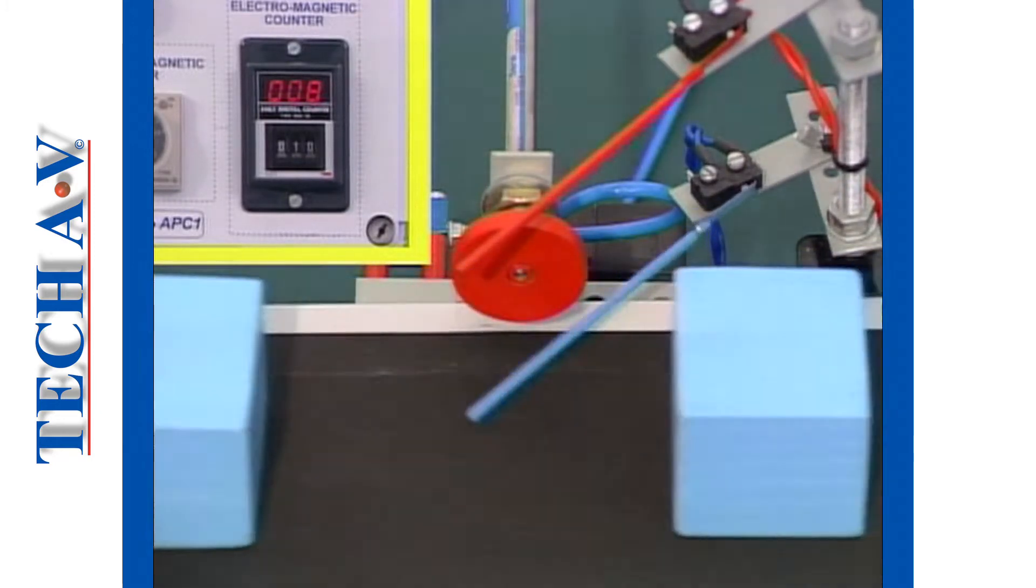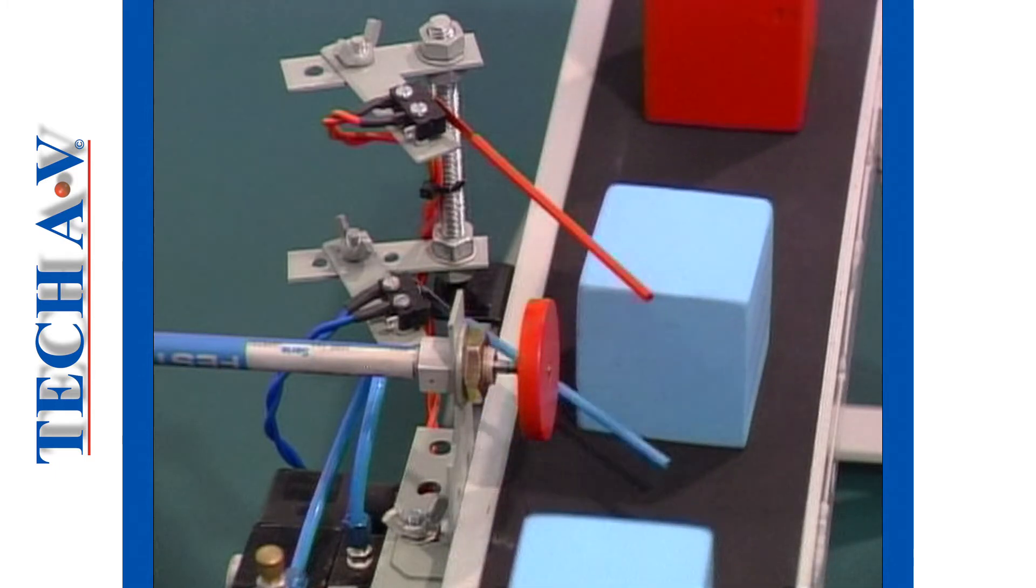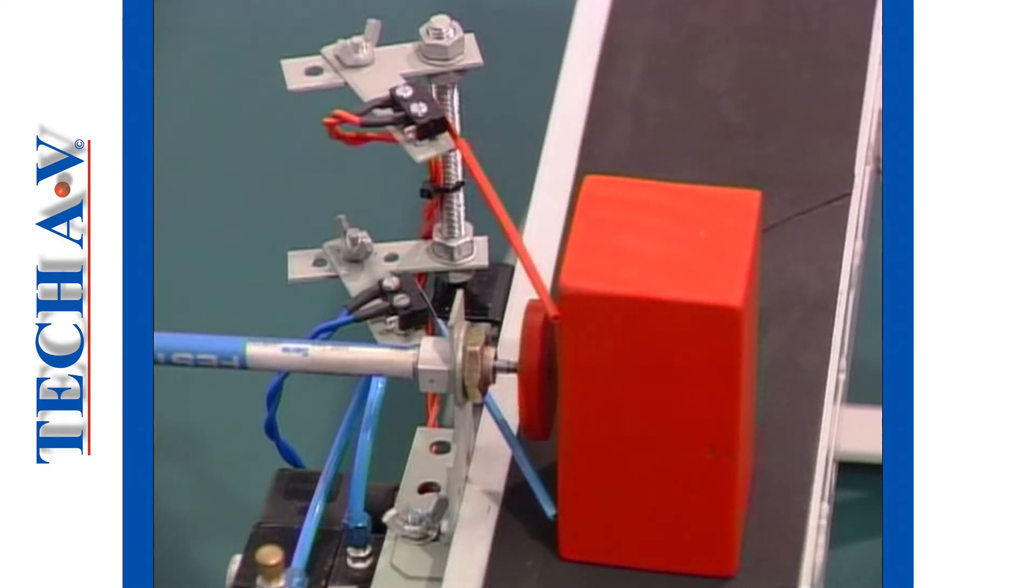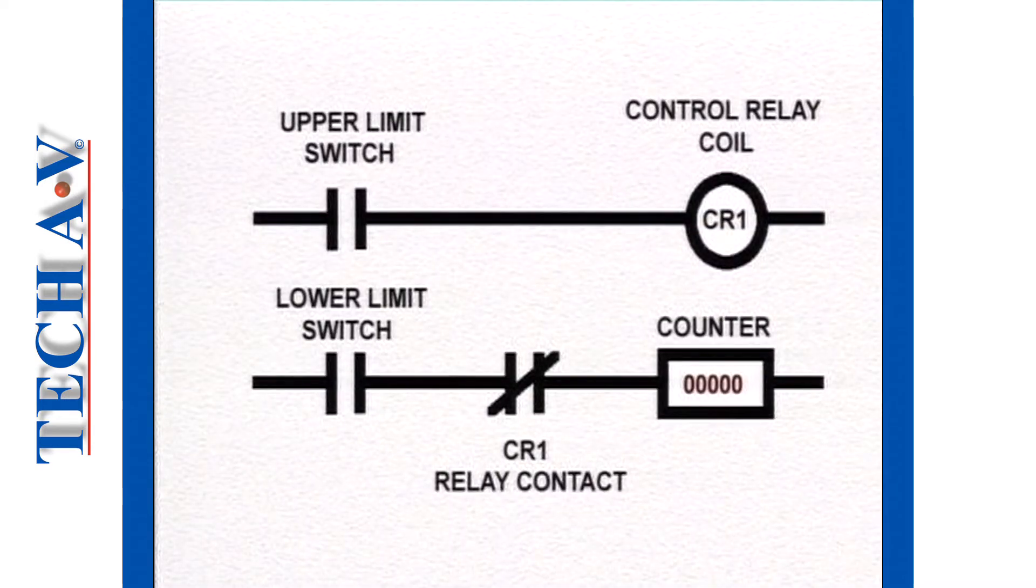But notice that this switch will be closed by both the short blocks and the long ones. Since we only want to count the short blocks, we cannot wire the switch directly to the counter. Instead, we will have to wire it in series with the other set of normally closed contacts in the control relay.